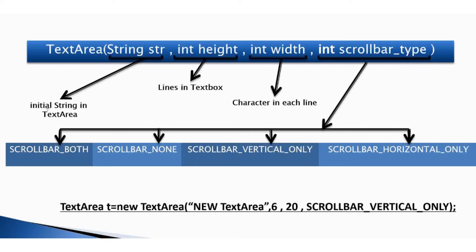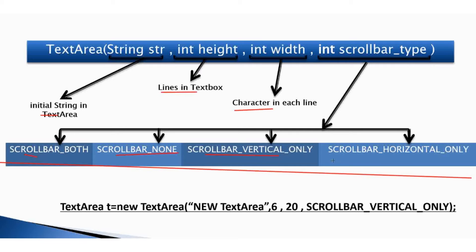The last constructor takes four parameters. The first parameter is the initial string in the TextArea, the second specifies the number of lines, the third specifies the number of characters in each line, and the last parameter specifies the type of scroll bar. There are four scroll bar types: SCROLLBARS_BOTH, SCROLLBARS_NONE, SCROLLBARS_VERTICAL_ONLY, and SCROLLBARS_HORIZONTAL_ONLY.